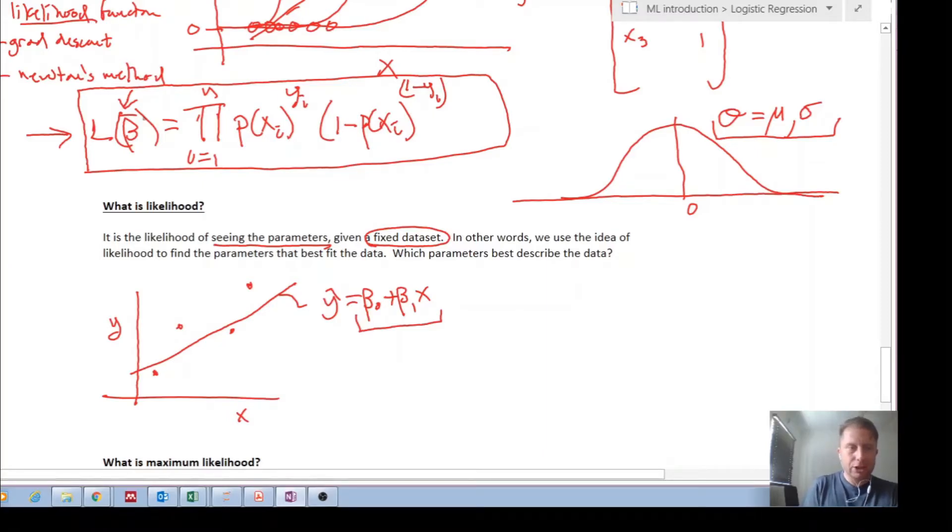But as you can see, as you vary your beta parameters, the likelihood is going to vary. Does it make sense? Let's quickly write this out because we're going to use it again.